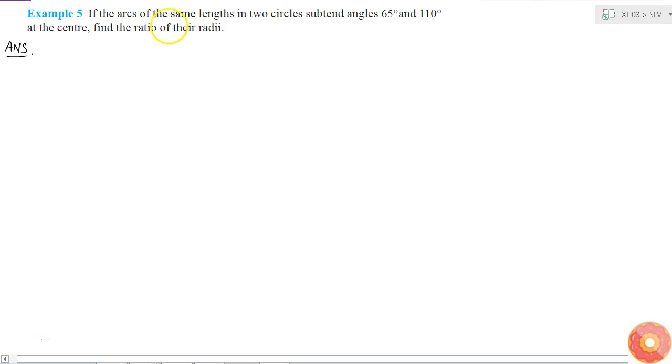Okay, what am I given? There are two circles, so let me call those radii r1 and r2. Now what is given: the arcs of same length in two circles subtend angles 65 degrees and 110 degrees at the center.